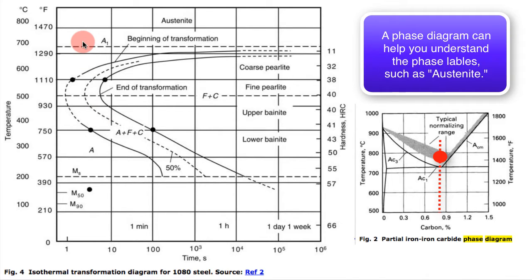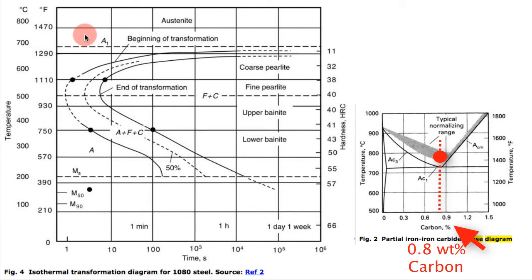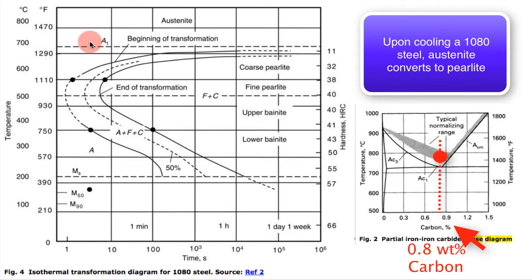It's very close to the eutectoid composition. So on a phase diagram, this would mean that austenite would convert almost entirely to perlite. Perlite is also a form of structure that is ferrite and carbide—that's what the F plus C is.